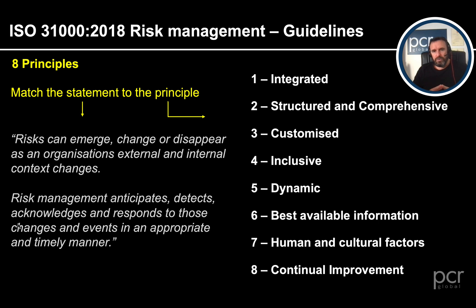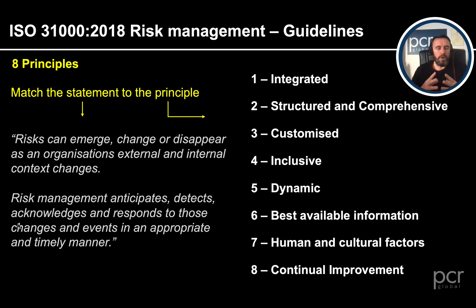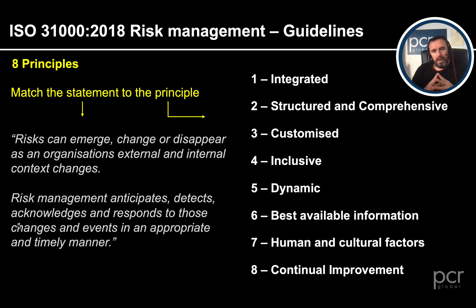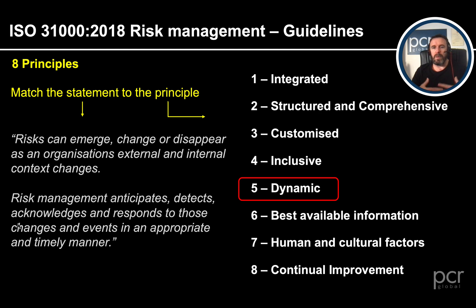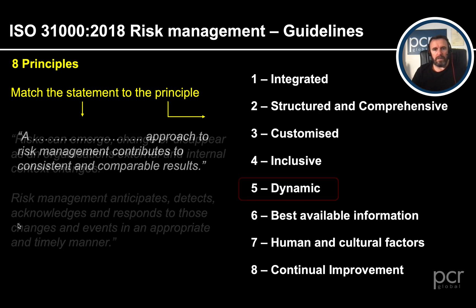The next one. Risks can emerge, risks can change, and risks can disappear as the external and internal context of the organisation changes. Nothing stays the same. Our internal context can change if the external context changes, so we've got to be monitoring this all the time. Pointless having a risk register that's sat there for months on end — it needs to be reviewed. Risk management anticipates, detects, acknowledges and responds to those changes and events in an appropriate and timely manner. Which principle does that fit best? Dynamic. Things are changing, and our risk management process and activities must deal with that dynamism.